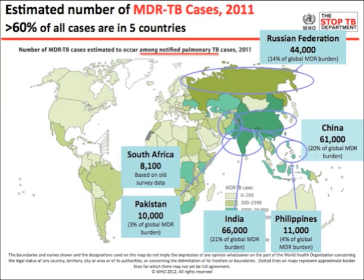In absolute terms, 5 countries — India, China, the Russian Federation, the Philippines, and Pakistan — plus South Africa as a 6th, account for more than 60% of all cases of multidrug-resistant tuberculosis in the world.